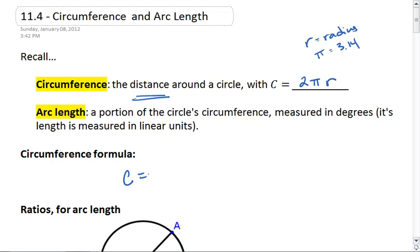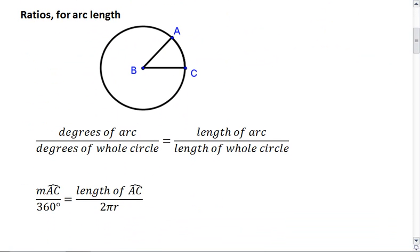So we want to make sure we remember that circumference is 2πr, or we can say π times d, where d is the diameter.